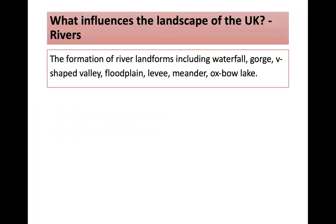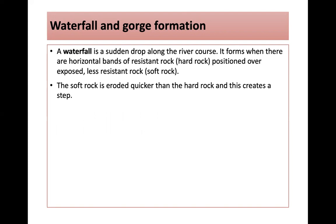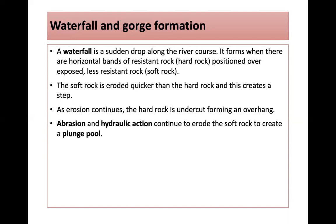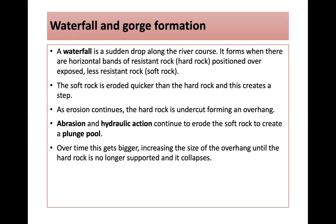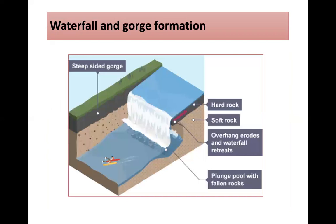Moving on to river landforms: waterfalls, gorges, V-shaped valleys, floodplains, levees, meanders and oxbow lakes. A waterfall is a sudden drop along the river's course. It forms when there are horizontal bands of resistant harder rock positioned over less resistant softer rock. The soft rock erodes quicker, creating a step. As erosion continues, the hard rock is undercut, forming an overhang. Abrasion and hydraulic action erode the soft rock to create a plunge pool. Over time the overhang grows until the hard rock collapses. This process continues and the waterfall retreats upstream, leaving a steep-sided valley called a gorge.